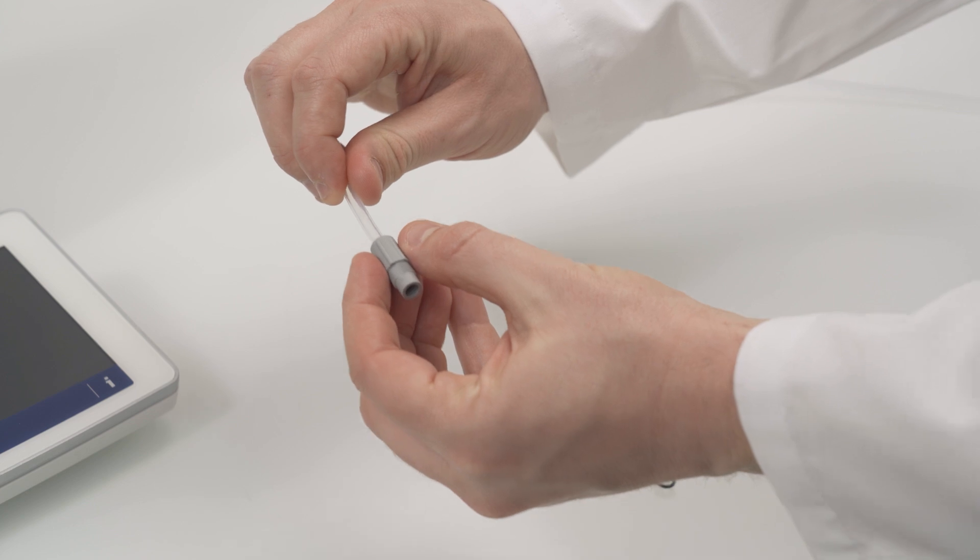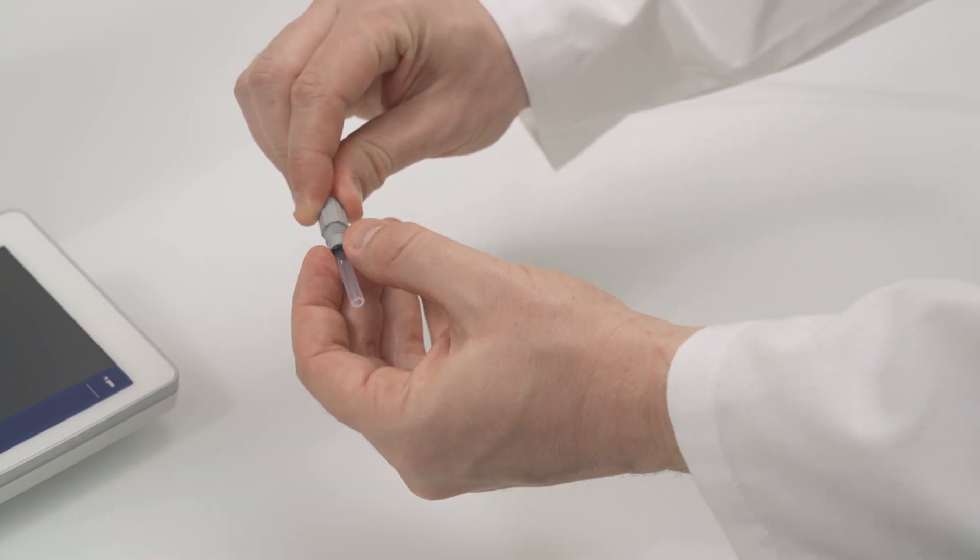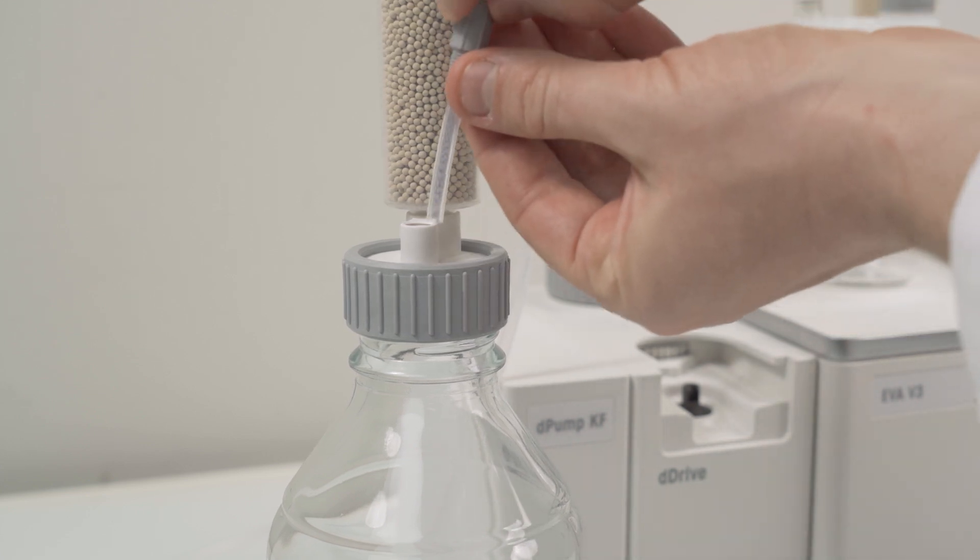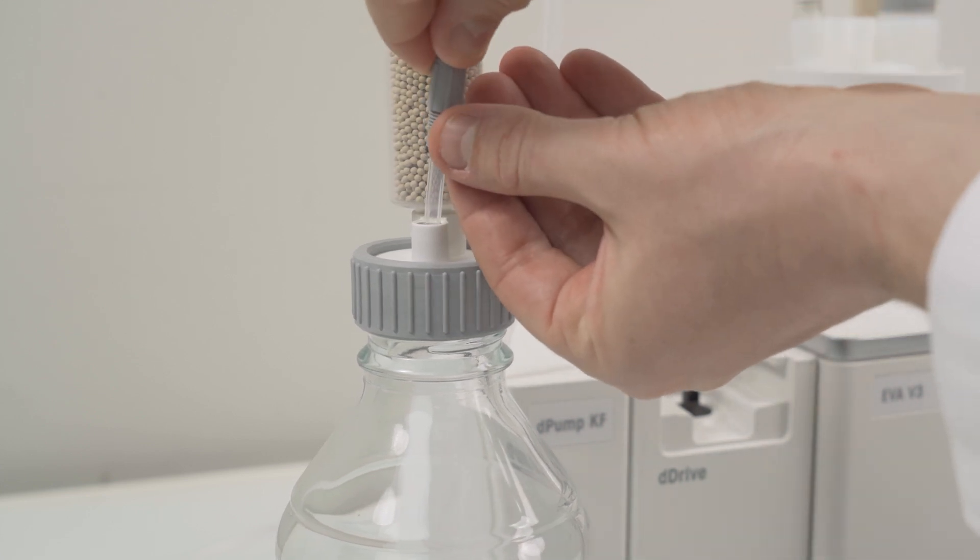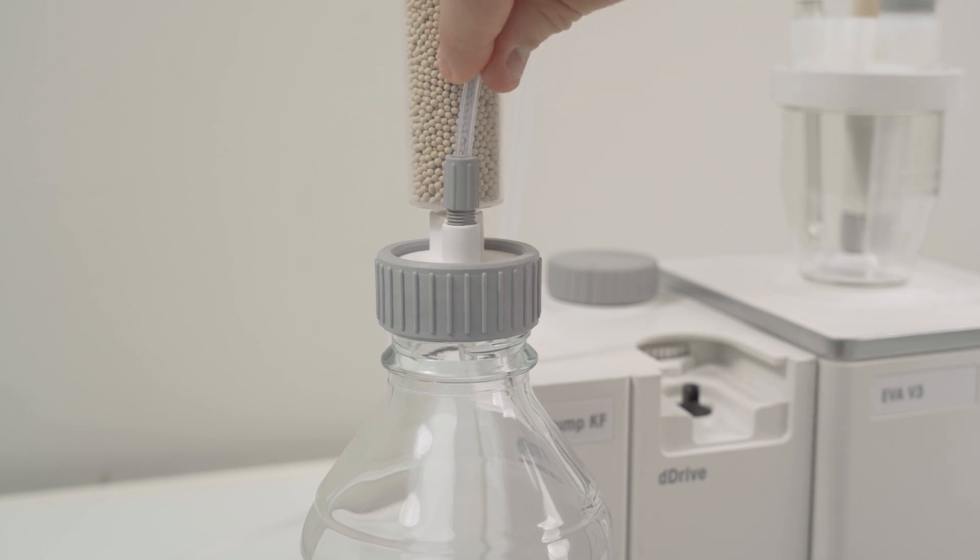Assemble the solvent tube with the O-ring and the adapter. Bring it to the waste bottle. Screw it in half way, push the tube down a little bit and then fix it by screwing it down completely.